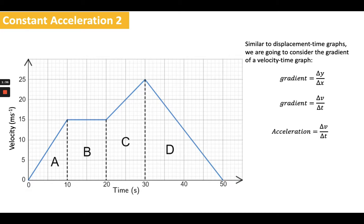That tells us straight away, because we know that acceleration is the change in velocity over change in time, that the acceleration is the gradient. So the gradient of the graph represents the acceleration of the body being represented by that graph.